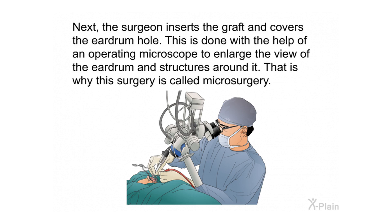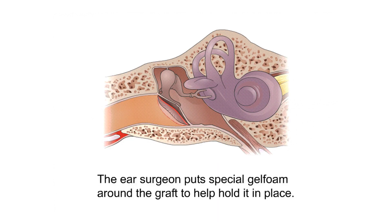Next, the surgeon inserts the graft and covers the eardrum hole. This is done with the help of an operating microscope to enlarge the view of the eardrum and surrounding structures — that is why this surgery is called microsurgery. The ear surgeon puts special gel foam around the graft to help hold it in place.